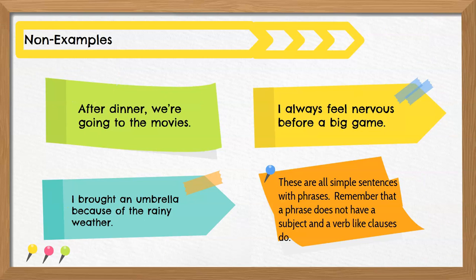The next four sentences are well written and do not have any mistakes. These are all simple sentences with phrases. However, they could be mistaken for complex sentences if you don't know what to look for. Remember that a complex sentence must have two clauses — that means two subject-verb pairs. Here's an easy way to check: find the AWUBAS word, then look to see that it's followed by a subject and a verb. If not, it's not complex.